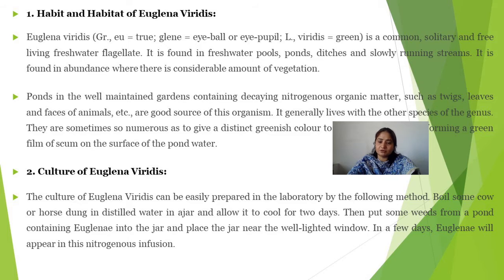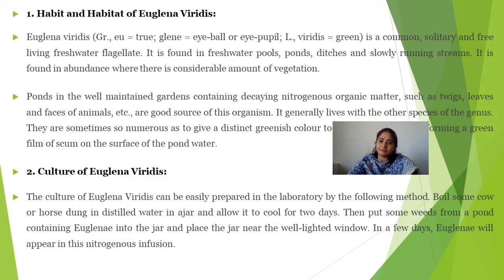The locomotory organelles are flagella. Nutrition in Euglena is mixotrophic — it is autotrophic when chloroplasts are active in daylight. In darkness, it becomes heterotrophic. Because of these combined characters — both plant-like and animal-like — we call Euglena the connecting link between plants and animals.